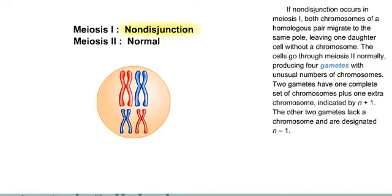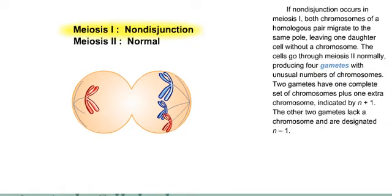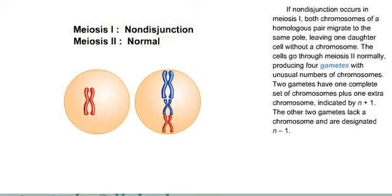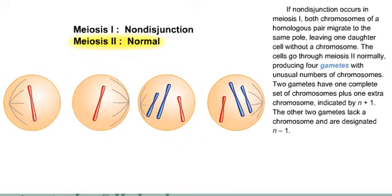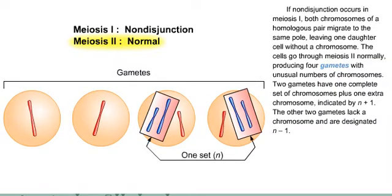If non-disjunction occurs in meiosis I, both chromosomes of a homologous pair migrate to the same pole, leaving one daughter cell without a chromosome. The cells go through meiosis II normally, producing four gametes with unusual numbers of chromosomes. Two gametes have one complete set of chromosomes plus one extra chromosome, indicated by N plus one. The other two gametes lack a chromosome and are designated N minus one.